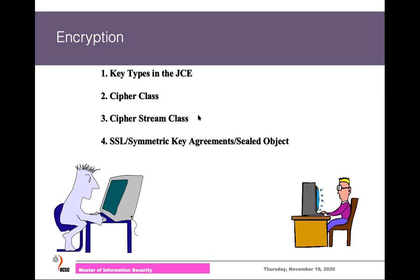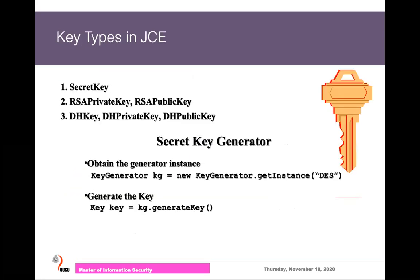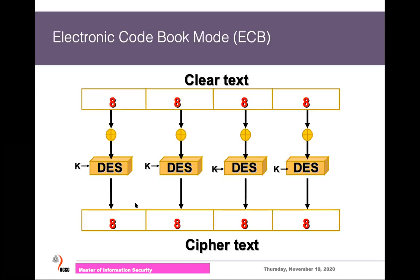Let's look at how to handle encryption and decryption using the Cipher class. The first step is to generate the security key. In Java, there is a class called KeyGenerator. We get the instance by calling the getInstance method, passing the algorithm name such as AES. It returns the corresponding key generator, from which we call the generateKey method. That returns a key object used to handle encryption and decryption.